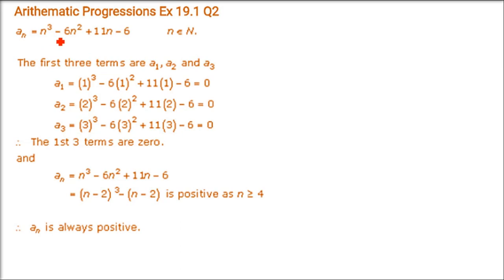A sequence is defined by aₙ = n³ - 6n² + 11n - 6, where n is a natural number. Show that the first 3 terms of the sequence are 0 and all other terms — that is, the fourth term onwards — are all positive.